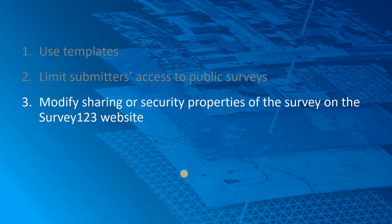Users who are familiar with ArcGIS Online always find it convenient and flexible to modify items under the Settings tab. My third tip is to modify the settings of the hosted feature layer and its field worker and stakeholder views under the Collaborate tab on the Survey123 website. Doing this will safeguard the functionalities of the survey and ensure it will not be broken. Changes in the Survey123 website will be reflected on the Settings tab of the related items in ArcGIS Online simultaneously.